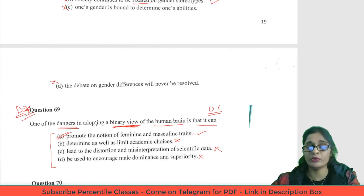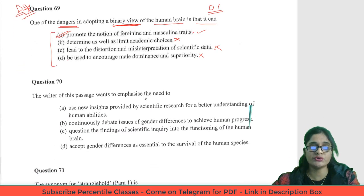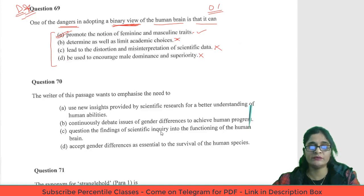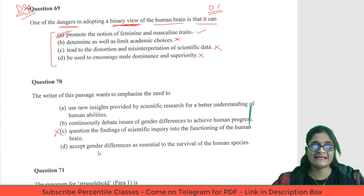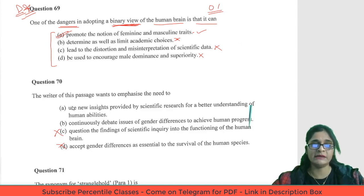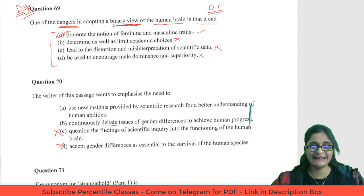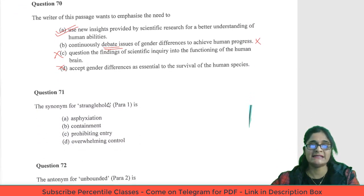Question 70: The writer wants to emphasize the need to do which of the following? Options: use new insights provided by scientific research for better understanding of human ability; continuously debate issues of gender differences to achieve human progress; question the findings of scientific inquiry; or accept gender differences as essential to survival. Options C and D are eliminated. Between A and B — simply debating continuously will not lead to human progress, so eliminate B. The answer is A.